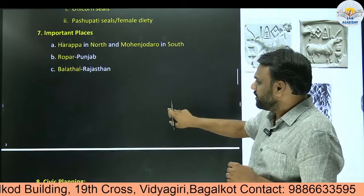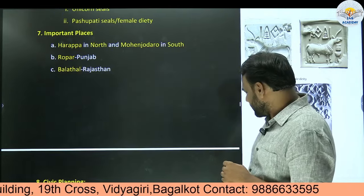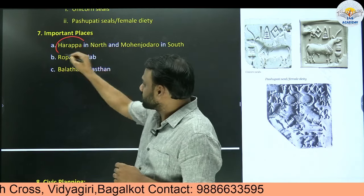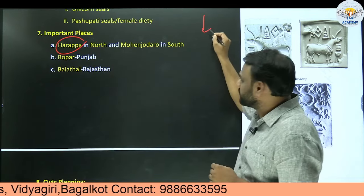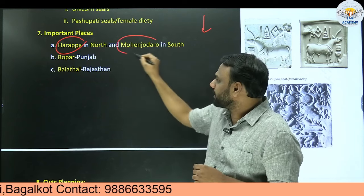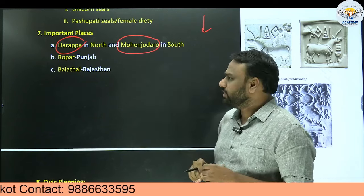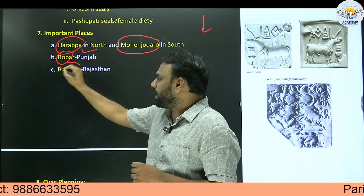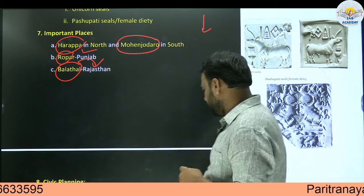Next, important places. When moving from north to south, the first we encounter is Harappa in the north. Next, we encounter Mohenjo-daro in the south. Rupar is present in the state of Punjab, and Balathal is present in the state of Rajasthan.